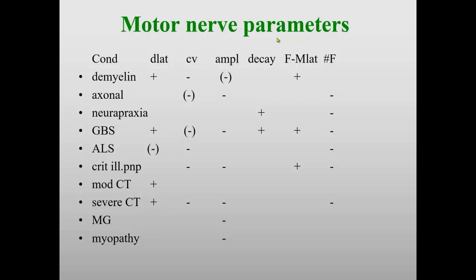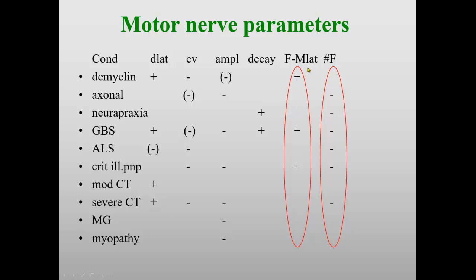Now let's look at some classical motor nerve parameters for different conditions, concentrating just on F-waves. In demyelination, latency is increased — as in Guillain-Barré and critical illness polyneuropathy. When it comes to persistence, it is reduced in axonal damage and neuropraxia, Guillain-Barré, and ALS — all because they also have low CMAPs — and in severe carpal tunnel syndrome when we have low motor amplitudes.